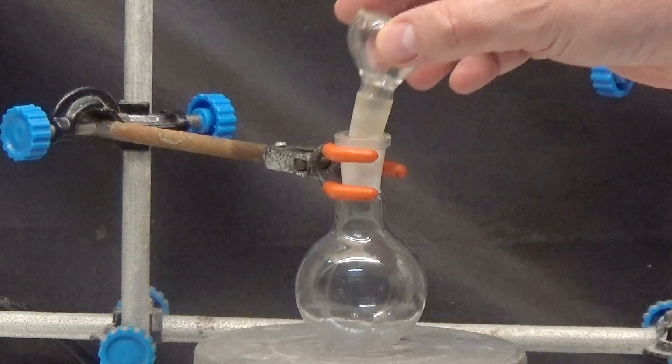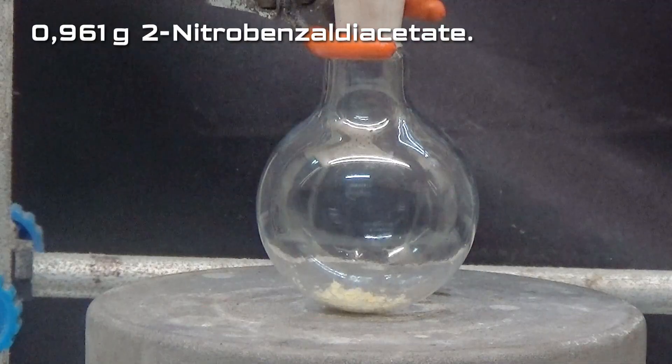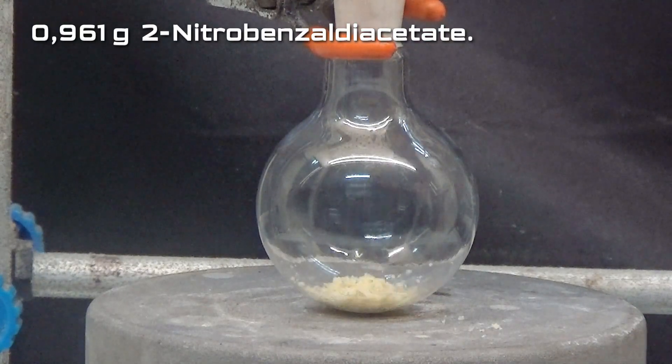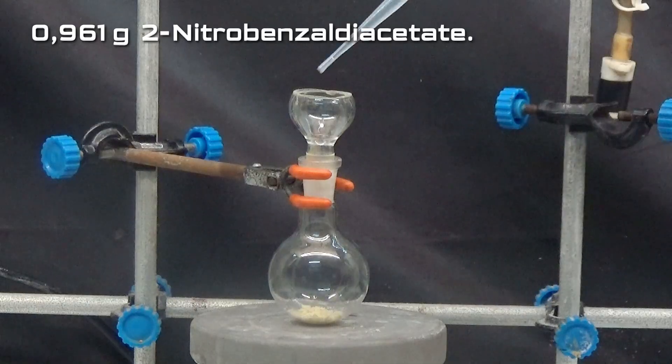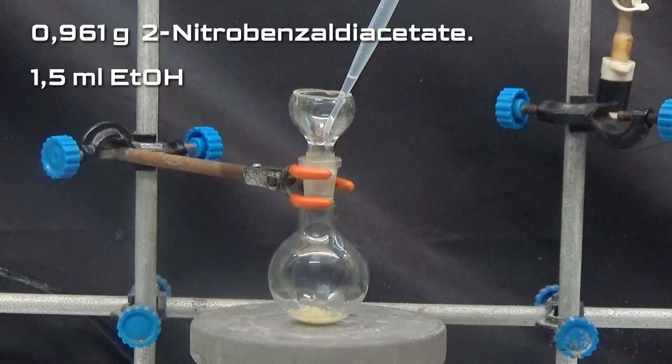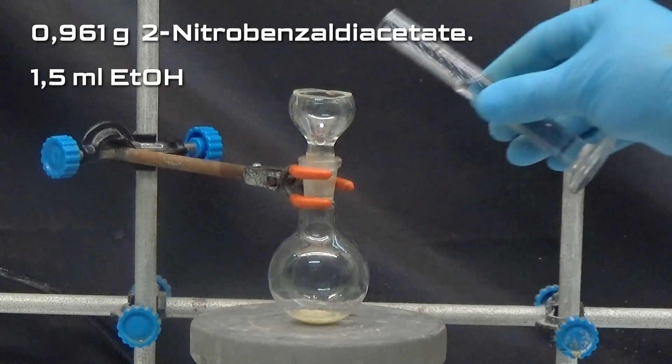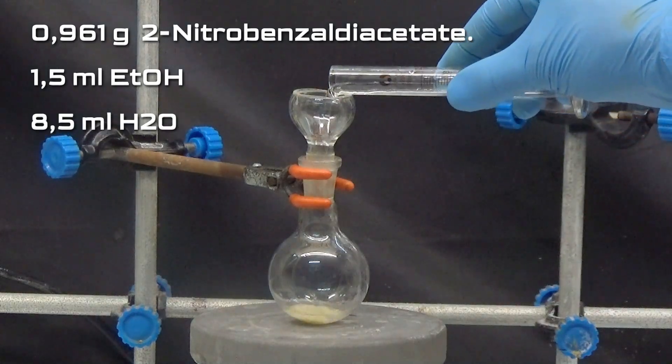In the second part of the synthesis we put the 0.961g of product obtained in the previous operation in a 50ml flask and add 1.5ml of ethanol, 8.5ml of water and 5ml of concentrated hydrochloric acid.